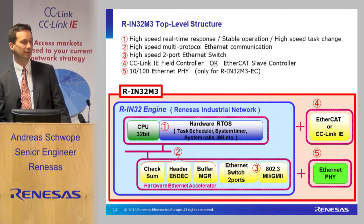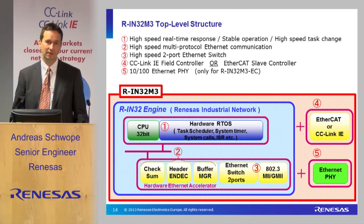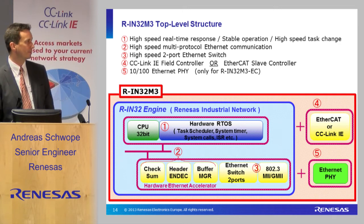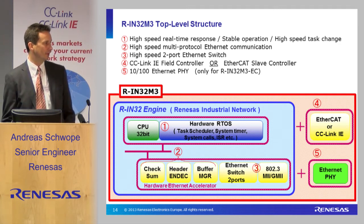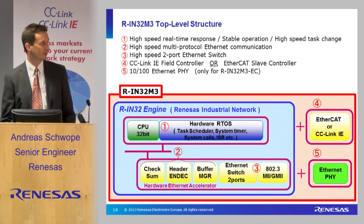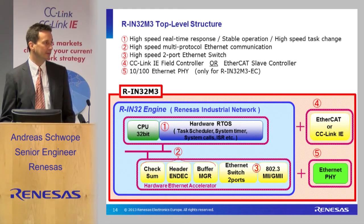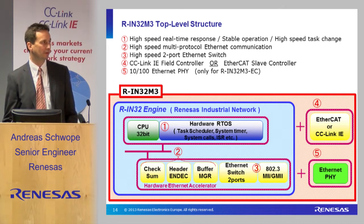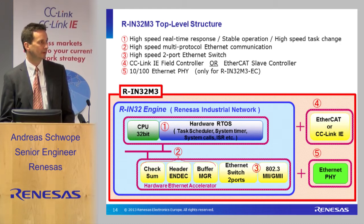This is another block diagram, but only from the acceleration point of view. Renesas has developed the RIN engine, located in the blue box, which consists of the CPU and the hardware real-time operating system — it's an accelerator. Then we have a hardware Ethernet accelerator, a switch, the specifics for CC-Link and the other family, and for EtherCAT an internal PHY.